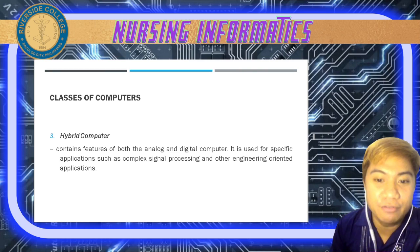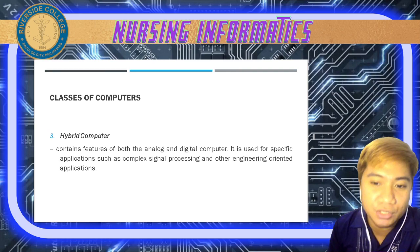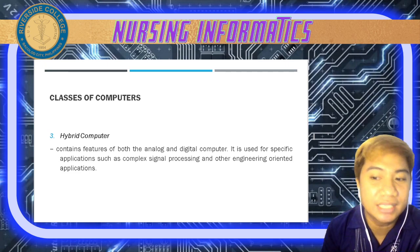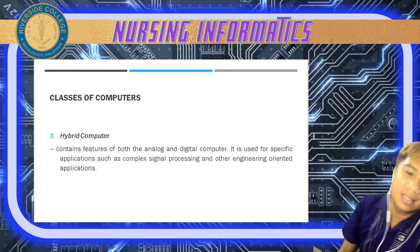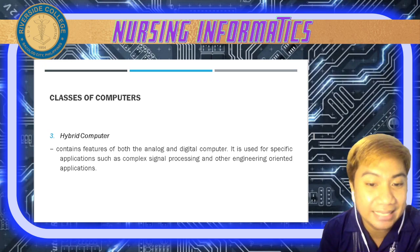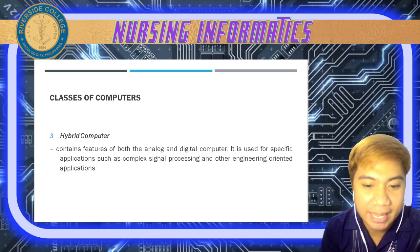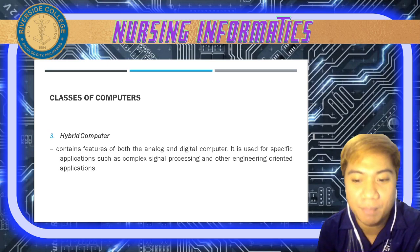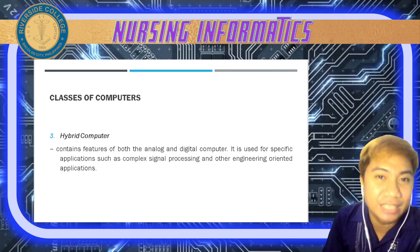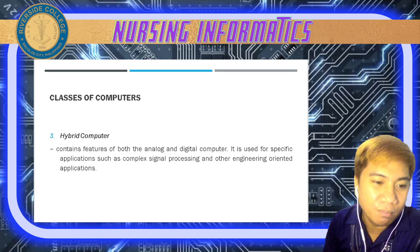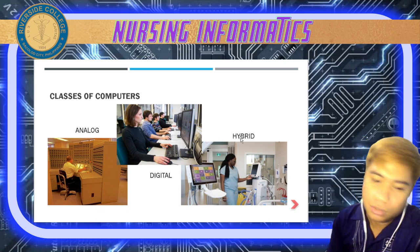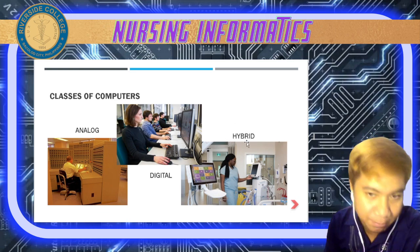We also have hybrid computers — a combination of the features of analog and digital computers. They are used for specific applications such as complex signal processing and engineering-oriented applications. Examples include the ECG and EEG (electroencephalogram), which capture both waveforms and digital format for analysis. In the hospital setting, we typically use digital and hybrid computers.